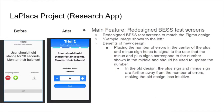I also redesigned the best test screens. The new design places the number of errors in the center of the plus and minus signs, helping to signal to the user that the minus and plus signs correspond to the number shown in the middle and should be used to update it. In the old design, the plus and minus signs are further away from the number of errors, making the old design less intuitive.